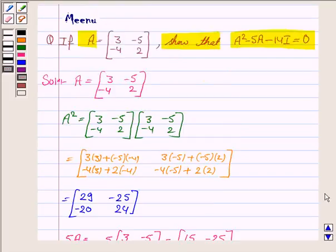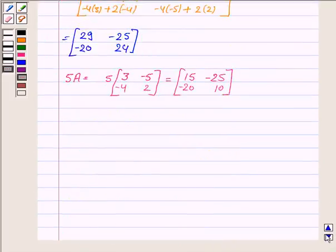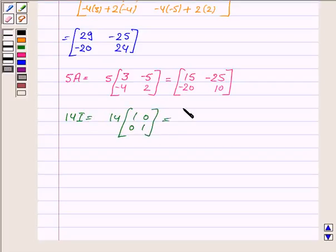Now we have to find 14I. I is the 2 by 2 identity matrix. So 14I becomes [14, 0; 0, 14].